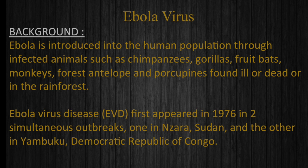Ebola virus. Ebola is introduced into the human population through infected animals such as chimpanzees, gorillas, fruit bats, monkeys, forest antelope and porcupines found ill or dead in the rainforest.